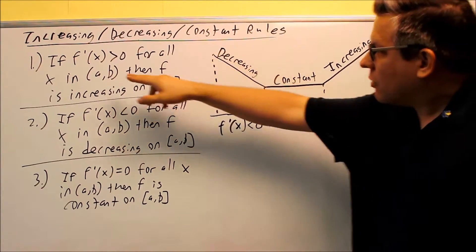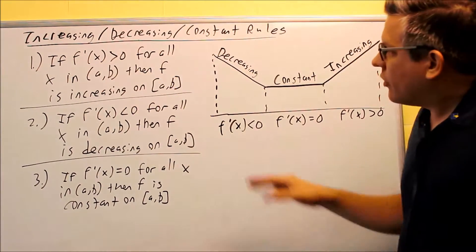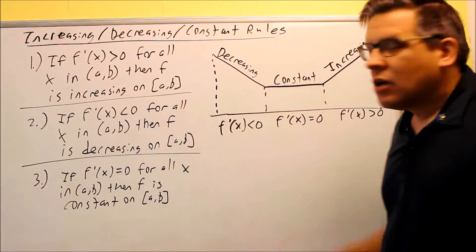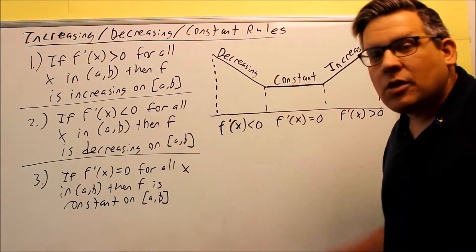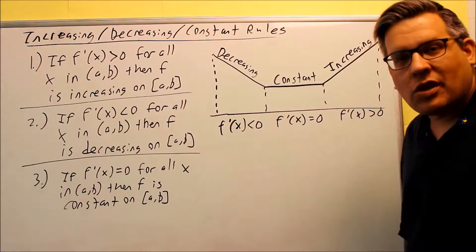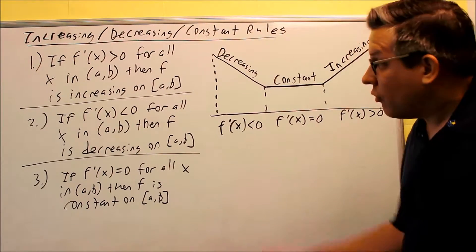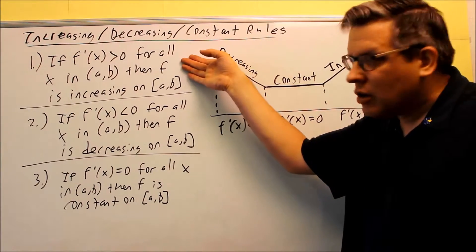So if your first derivative is greater than zero for all x on the open interval, then f has to be increasing on the closed interval from a to b. Also, it has to be continuous on the closed interval and differentiable on the open interval from a to b in order for this to work.